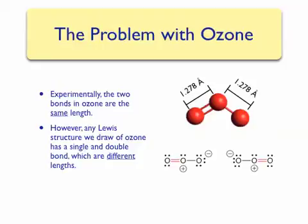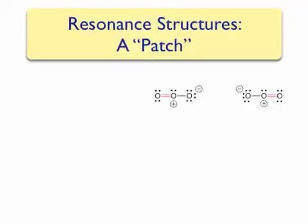When a theory is not consistent with experimental observations, it needs to be modified. Lewis' theory was modified by Linus Pauling by the inclusion of resonance structures.